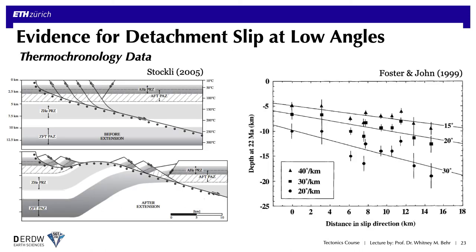People have also looked at this problem from the point of view of thermochronology. This diagram on the left shows what happens to specific isotherms in the crust corresponding to the partial retention zones of different thermochronometers. The isotherms become warped upward within the footwall of the detachment due to advection of heat. So if you walk along the detachment in the slip direction, you should expect to encounter warmer and warmer geothermal gradients or higher temperature thermochronometers. Inverting data collected in this way for transects along detachments that are part of the Whipple detachment system yields calculated detachment fault dips again ranging from about 15 to 30 degrees, supporting the idea of shallow fault slip.